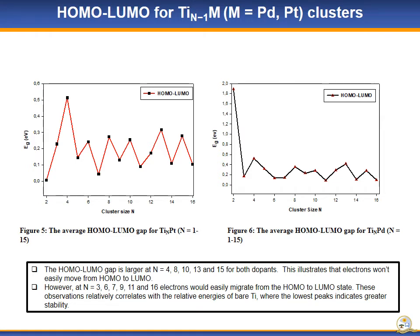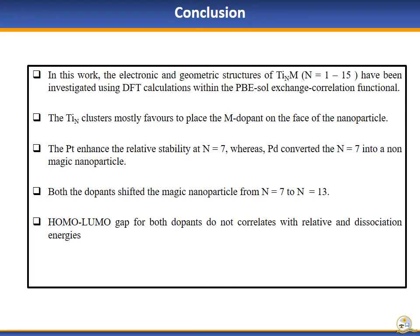This illustrates that electrons won't easily move from the HOMO to the LUMO. In conclusion, the electronic and geometric structures of doped titanium clusters have been successfully investigated using DFT. The titanium clusters mostly prefer to place the M-dopant on the face of the nanoparticles. Pt enhanced the relative stability, while Pd converted N=7 into a non-magic nanoparticle. Both dopants shifted the magic cluster from N=7 to N=13. The HOMO-LUMO gap for both dopants does not correlate with the relative stability and dissociation energy.